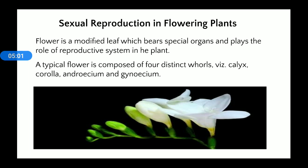Now, sexual reproduction in flowering plants. In the previous parts, asexual reproduction in plants — known as vegetative propagation — was discussed. Here, sexual reproduction in flowering plants is discussed. A flower is a modified structure that contains all the organs required for sexual reproduction. A typical flower is composed of four distinct whorls: calyx, corolla, androecium, and gynoecium.